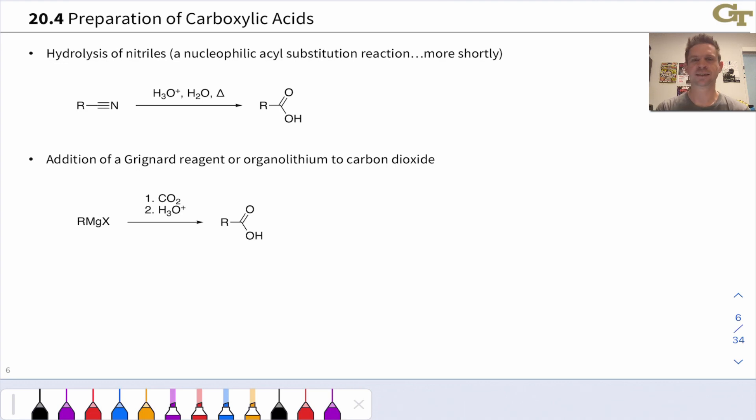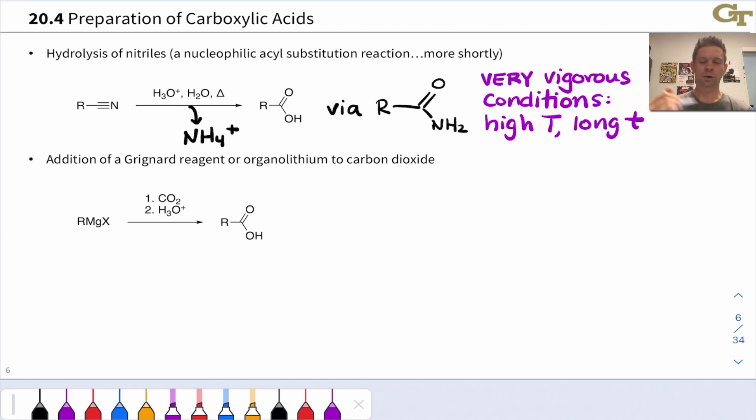With quite a bit of heat, this gives the carboxylic acid and ammonium as a byproduct via an amide intermediate with an NH2 group linked to a carbonyl group like this. And this requires very, very vigorous conditions, high temperature, long reaction times, quite a bit of heating, because the nitrile is rather difficult to hydrolyze for reasons that we'll see a little bit later, but it does work.